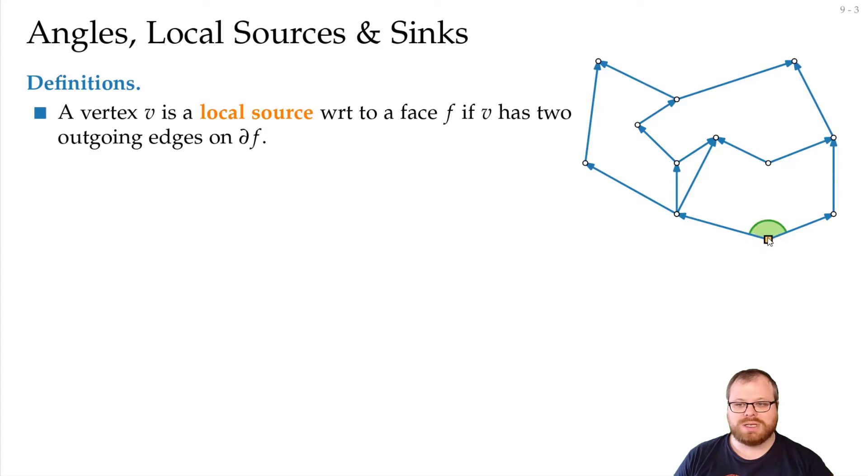So for example, this one here is a local source, because it only has these two outgoing edges. But also in this face here, this is a local source, because we only have outgoing edges on this face, although this is not a global source. It's also a local source for this one, then here we have these two local sources, and on the outer face here we have this local source.